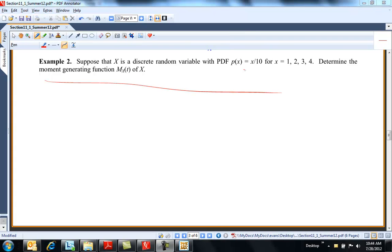I thought I should go ahead and continue moment generating functions with a discrete example because we've just looked at a continuous one for the exponential. Here's a discrete density function.